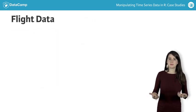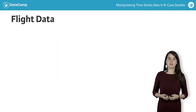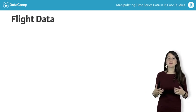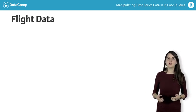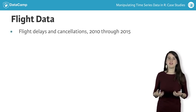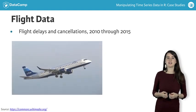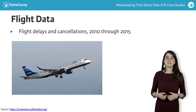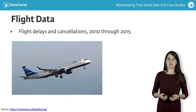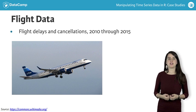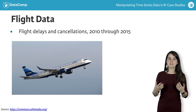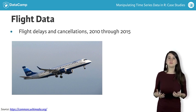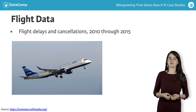In this chapter, you'll practice encoding and manipulating XDS objects by exploring Boston area flight data, including information on flight delays and cancellations. As you work through these exercises, try to think like a data scientist: what information is contained in the data, and how can you manipulate it to better reveal that information?